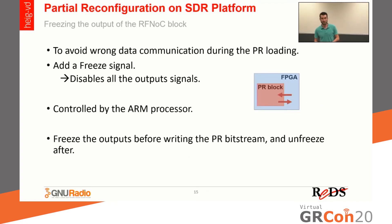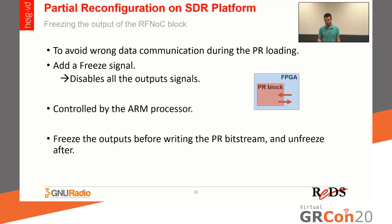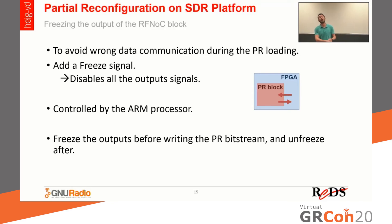To have partial reconfiguration on the SDR platform, we need to add a freeze signal. During the loading process of the PR region, glitches can occur on the interface between the static part and the PR part, which would send wrong data — and we want to avoid that. The freeze signal disables all outputs of the PR block. This freeze signal can be controlled by the ARM processor. When we want to program a PR region, we enable the freeze signal, write the partial bitstream, and then disable the signal to use the new functionality.